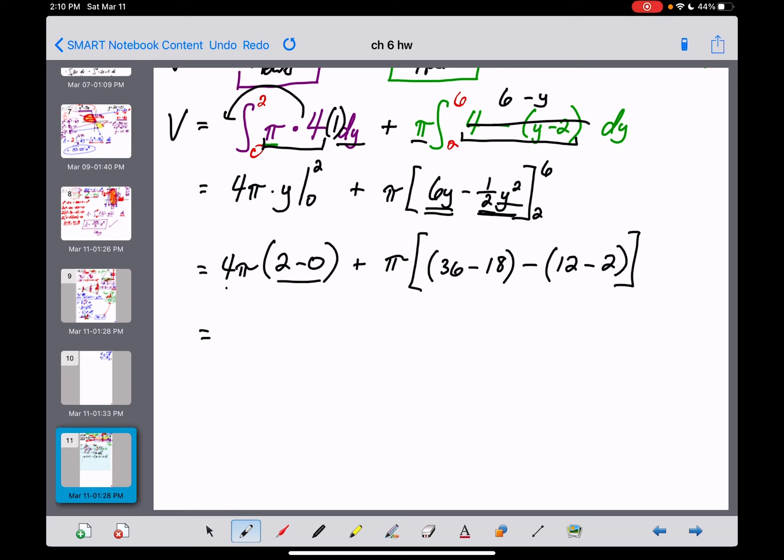All right, so where are we now? Two times four pi, the volume of that cylinder on the bottom of this thing is just going to be an eight pi. Plus, let's see here, the 36 minus 18 just becomes an 18. 12 minus two just becomes 10. And the 18 minus 10 is going to be eight times that pi. Oh, that's convenient. We'll get another eight pi right there, which I'm pretty sure means that my overall answer here is going to be 16 pi cubic units for the volume of that entire solid.